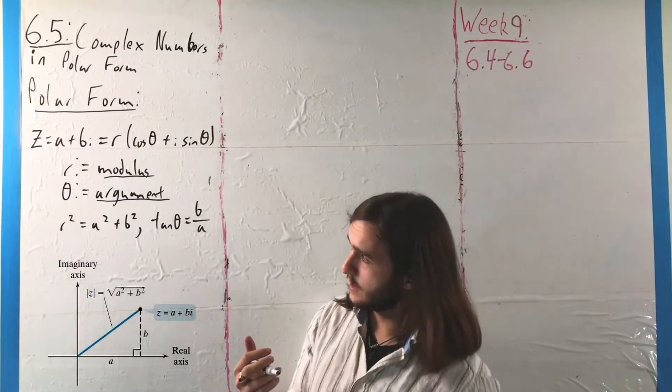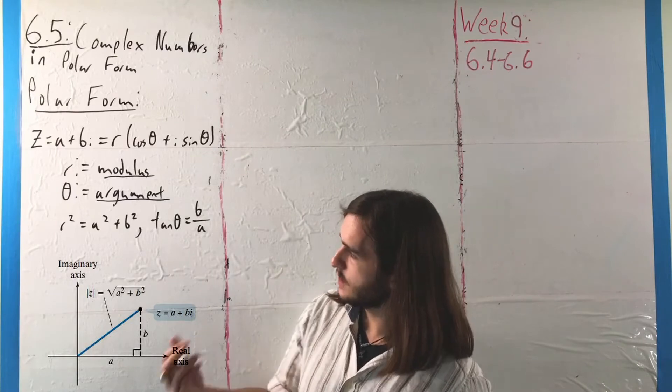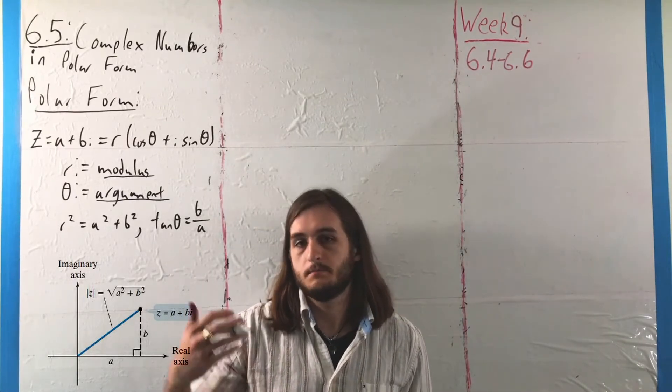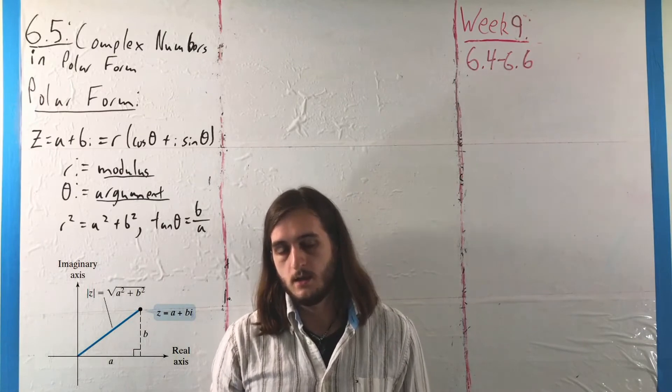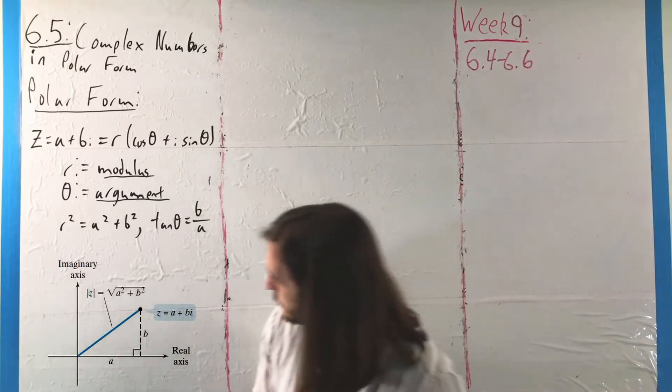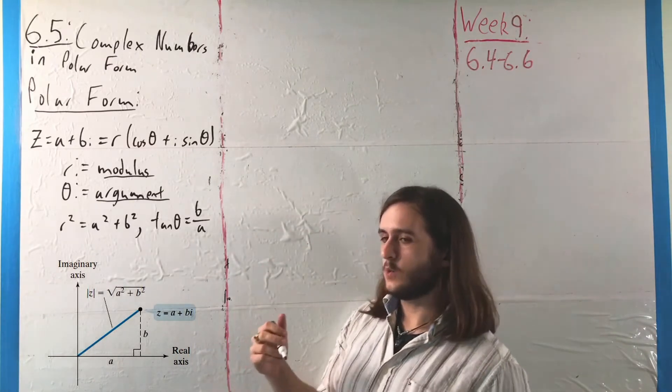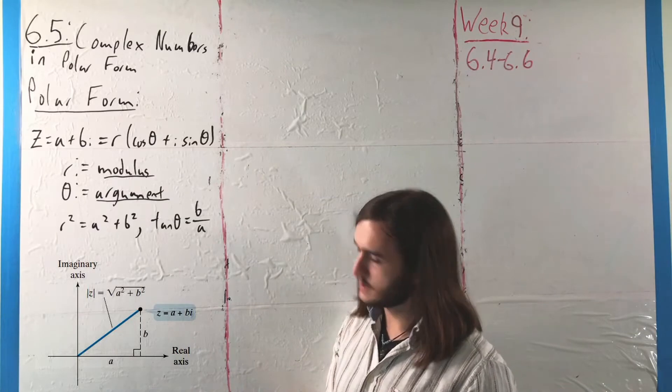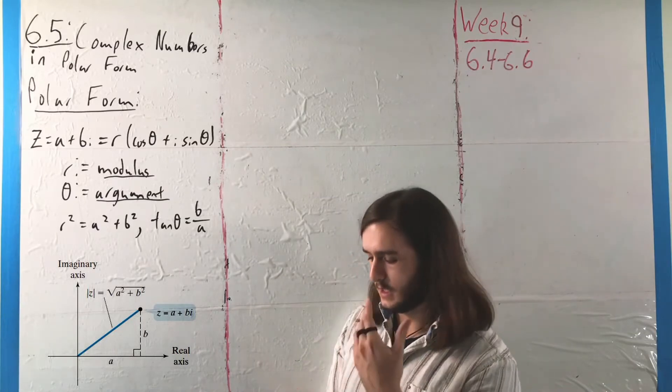With our understanding of trigonometry, it should come more naturally now to talk about the polar form of a complex number. If we have something like z = a + bi, we can convert that to terms of cosine and sine.